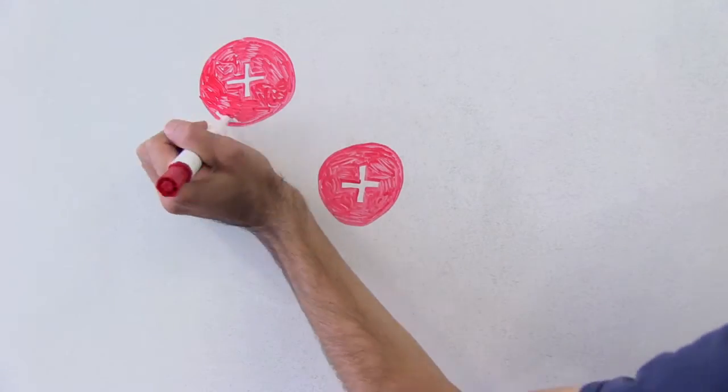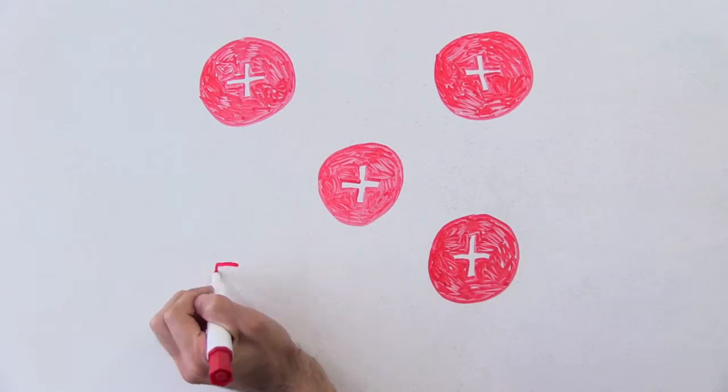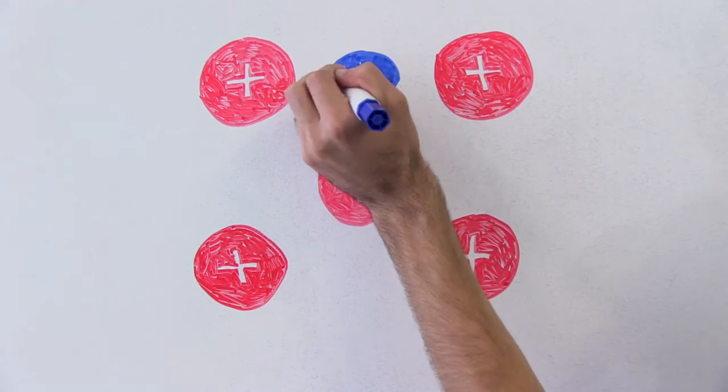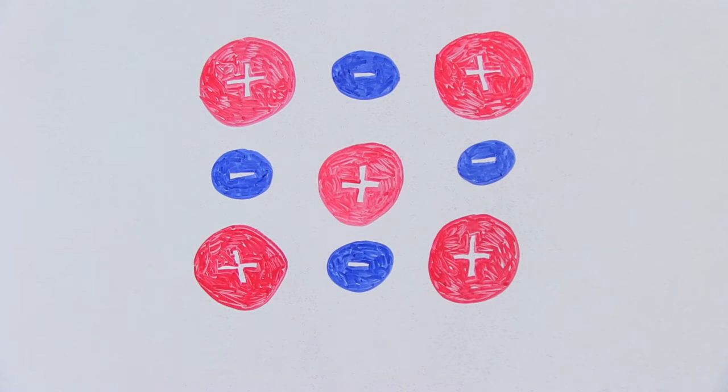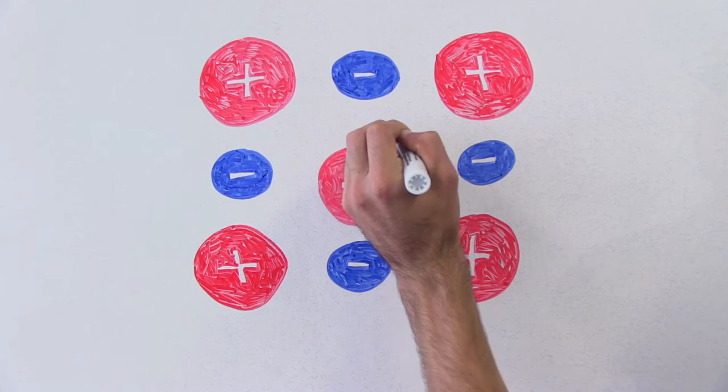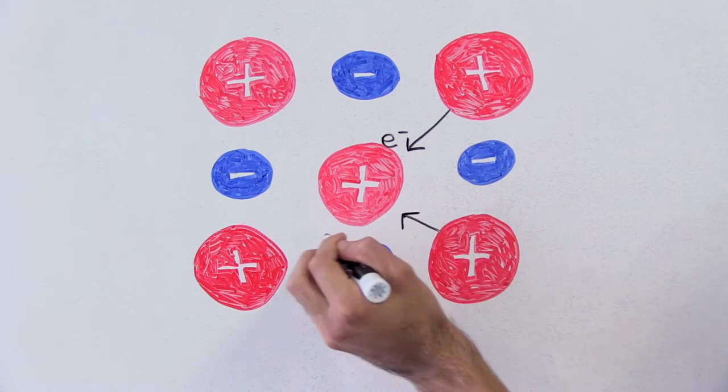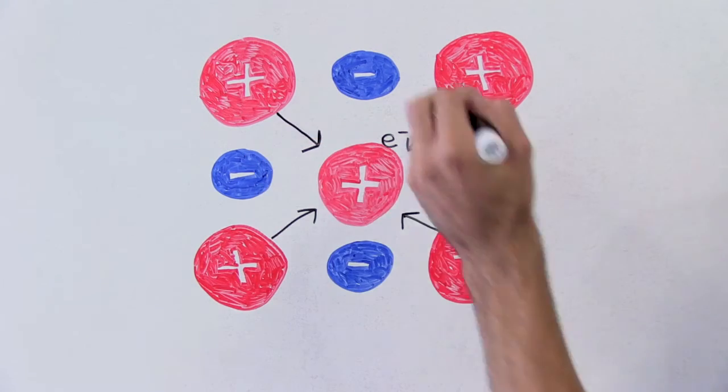This is because when you add charge carriers to these materials, they're surrounded by other charged ions that can attract the carrier. This is called a small polaron. The charge plus the distortion of the ions is the polaron. And if the trapping is very strong, we term it a small polaron.